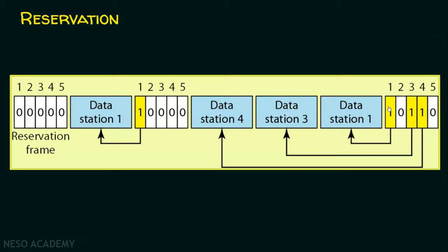In this example, station one is making a reservation, station two is not, and stations three and four are making reservations, while station five is not. Since station one reserved, it sends its data. Station two does not send because it did not reserve the channel. Then station three sends, followed by station four. In the next time interval, only station one reserves and sends. In the last interval, no station makes a reservation, so nobody sends data.